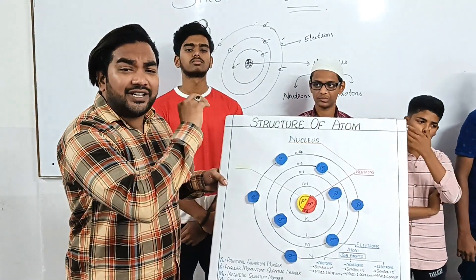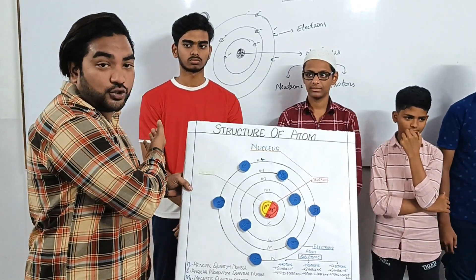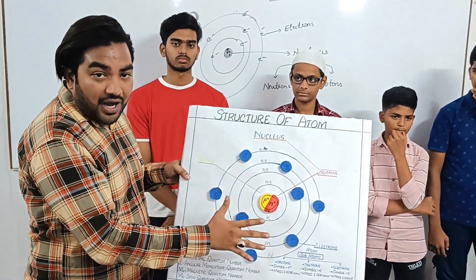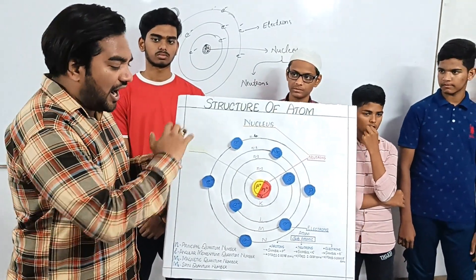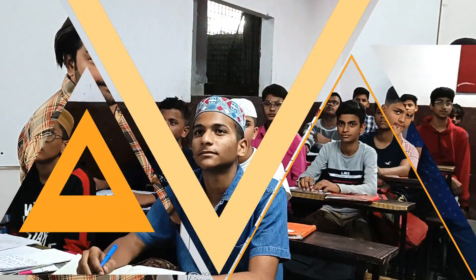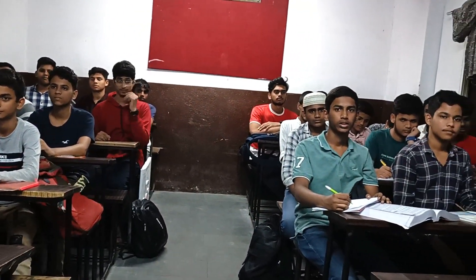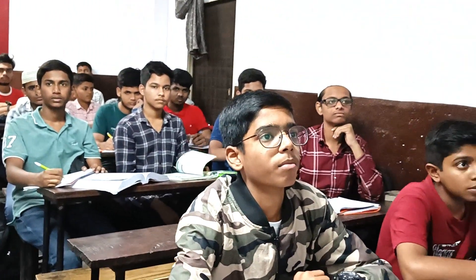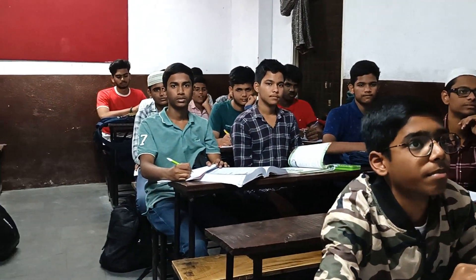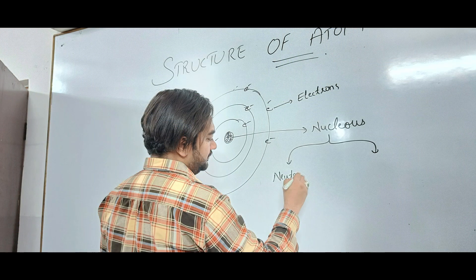The first scientist, J.J. Thomson, explained how the atom looks — like a watermelon, with the red color showing the positive charge and seeds embedded like electrons. After Rutherford and subsequent scientists, the understanding evolved. The final structure shows the center has a nucleus, and around the nucleus electrons revolve in particular orbits. Each orbit contains electrons, and the particles — electrons, protons, and neutrons — each have their respective masses. This is the complete structure of the atom, explained by many scientists.